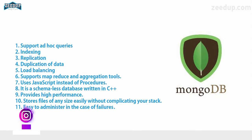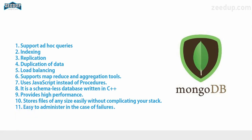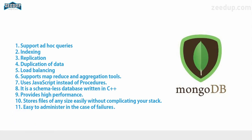The second feature is indexing. There are a number of fields in a document, and MongoDB allows us to index any of those fields very easily. The third feature is replication — MongoDB supports something known as master-slave replication.